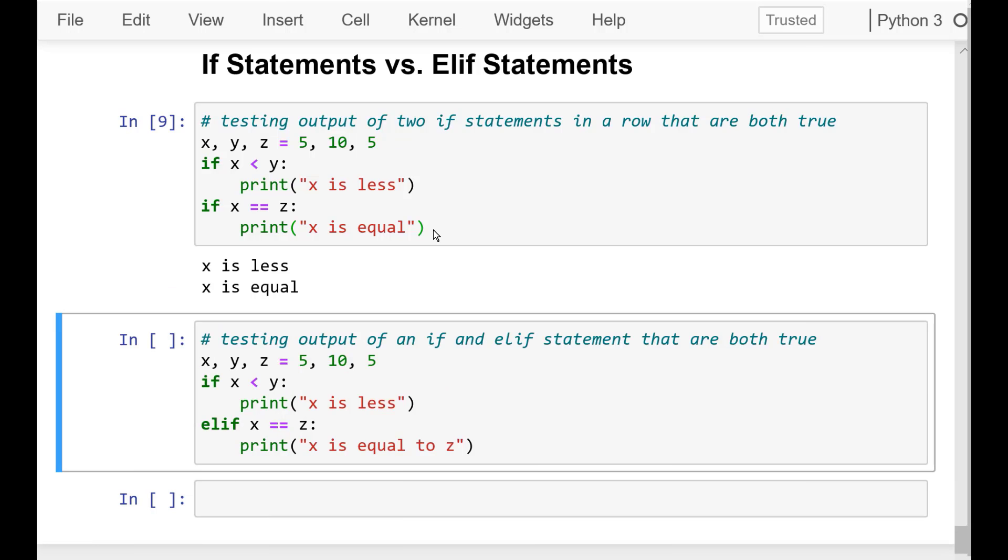Go ahead and run that cell. Notice that the resulting output is both print statements here. This is due in part to having two if statements. These if statements are not related to each other. They are separate conditional statements, whereas an elif is always connected to an if.